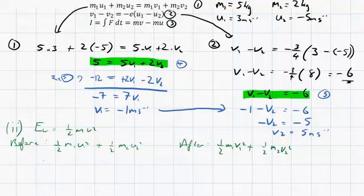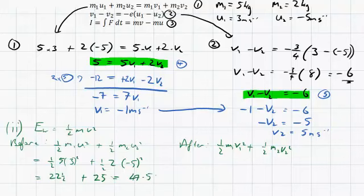So subbing in all these numbers, it's just a matter of subbing them in. It's going to be 1 half m1 is 5, u1 is 3 squared plus 1 half, m2 is 2 and u2 is minus 5 squared. So if we square these out, we get 1 half times 5 times 9, which would be 45 by 2, 22 and a half plus, and minus by minus would give us a plus value. So minus 5 squared would be 25. So before the collision we have a kinetic energy of 47.5 joules.